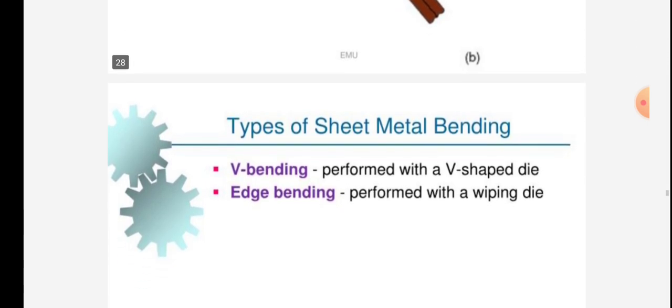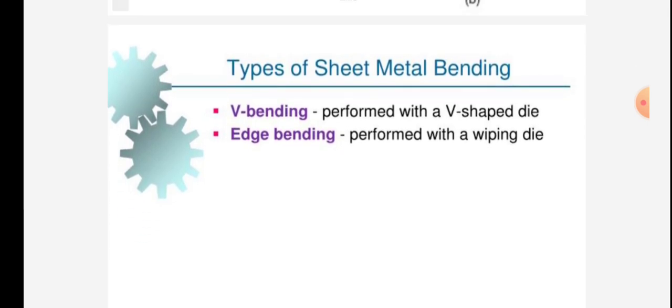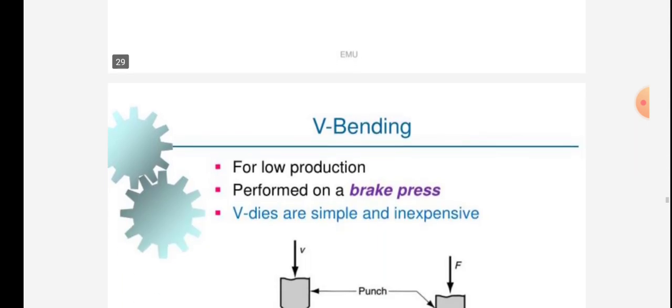It is shown in figure B. The types of sheet metal bending: V-bending, performed with a V-shaped die, and edge bending, performed with a wiping die.